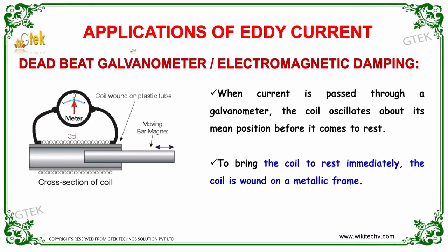Now I am going to talk about the application of eddy current. The first important application of eddy current is the deadbeat galvanometer, or electromagnetic damping. When current is passed through a galvanometer, the coil oscillates about its mean position before it comes to rest.